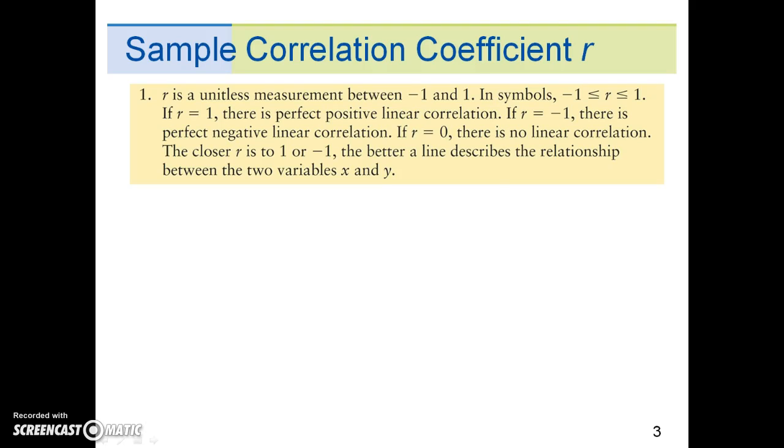If R equals 1, there is a perfect positive linear correlation. If R equals negative 1, there is a perfect negative linear correlation. If R equals 0, there is no linear correlation. The closer R is to 1 or negative 1, the better a line describes the relationship between the two variables x and y.